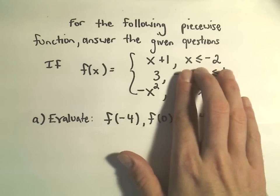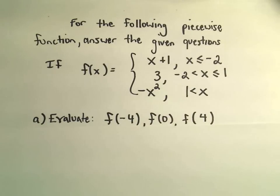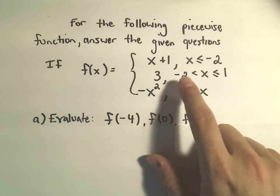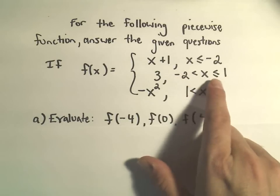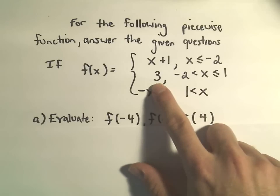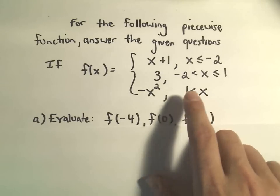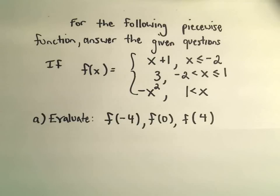So notice if we start with an x value less than or equal to negative 2, we'll use the formula x plus 1. If we start with a value between negative 2 and 1, including 1 but not negative 2, it says you just get the value 3 out. And if you start with an x value that's greater than 1, we use the formula negative x squared.